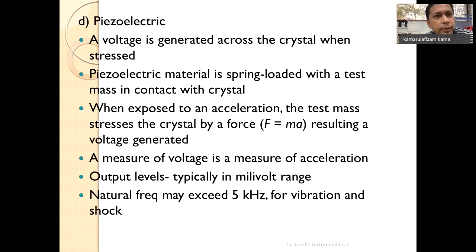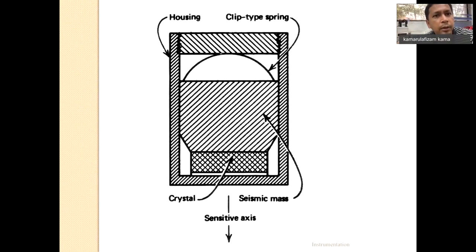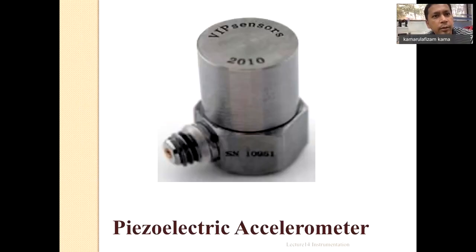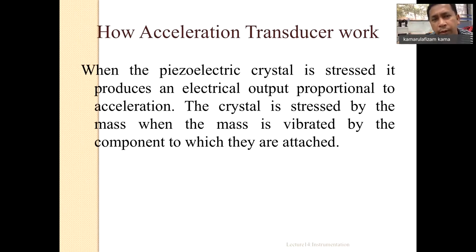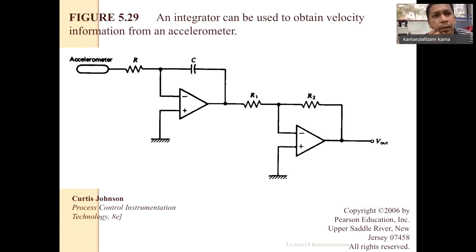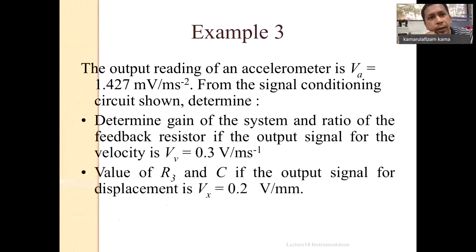The piezoelectric type of accelerometer is based on a crystal. When it is stressed or pushed by the mass of the accelerometer, it produces a voltage and current. When using a piezoelectric accelerometer, you need a signal conditioner, which acts as an integrator. This circuit is used as the signal conditioner for the accelerometer.